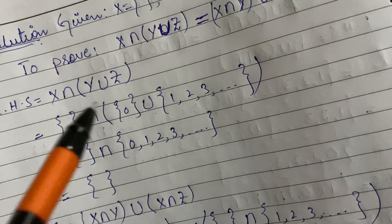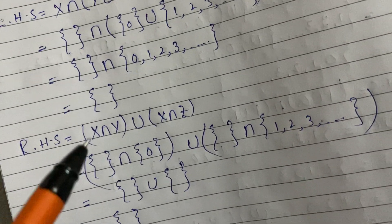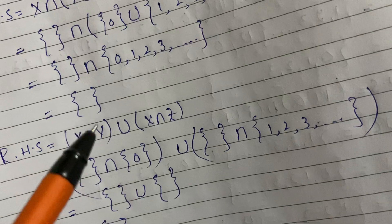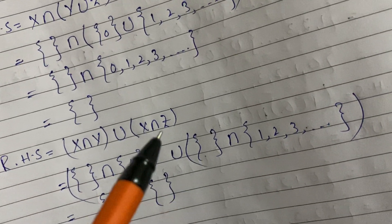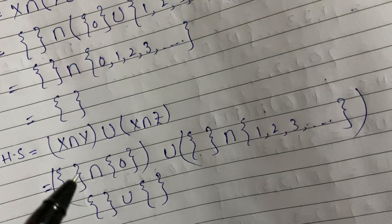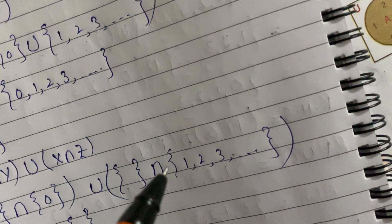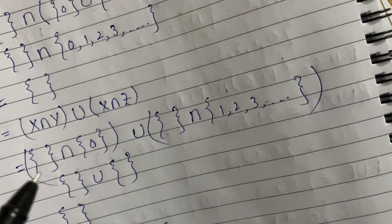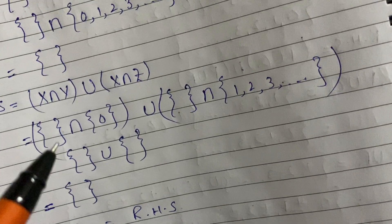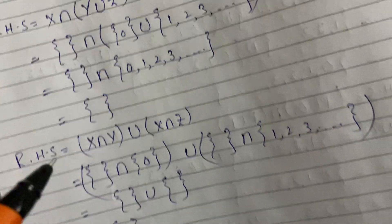There is no common element between ∅ and {0, 1, 2, 3, ...}, so the LHS = ∅. For the right hand side: (X ∩ Y) ∪ (X ∩ Z). X ∩ Y = ∅ ∩ {0} = ∅ (no common element). X ∩ Z = ∅ ∩ {1, 2, 3, ...} = ∅. The union of two empty sets is also an empty set, so RHS = ∅.